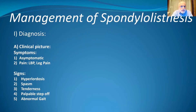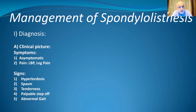Management of spondylolisthesis begins with diagnosis, starting with the clinical picture. It can be either asymptomatic or present with pain — either back pain, leg pain, or both. Different signs include muscle spasms, tenderness, and a palpable step-off, which in cases of lytic spondylolisthesis will be at a level higher than the level of slip. There may also be an abnormal gait resulting from hamstring tightness.